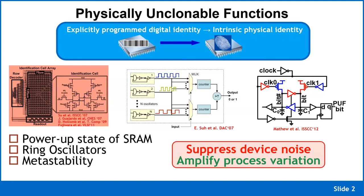Today, we generate this random value and explicitly program it onto one-time programmable fuses. The problem is that it works, but that value is physically present on the die, available for anyone to reverse engineer. Also, as a manufacturer, Intel has to guarantee to customers that we are not keeping track of and do not store this ID anywhere.